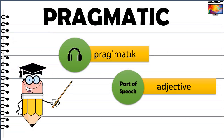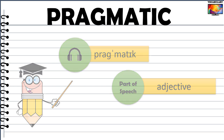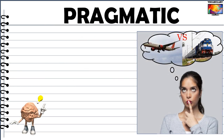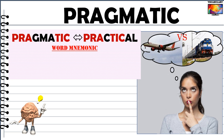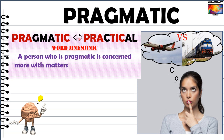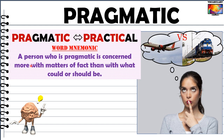Finally, we come to another very common and useful word — pragmatic, which is used as an adjective. There is a one-word synonym of pragmatic that is the best memory clue: practical. Being pragmatic simply means being practical and realistic. A person who is pragmatic is concerned more with matters of fact than with what could be or should be.